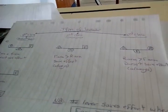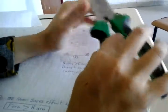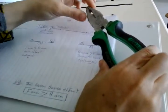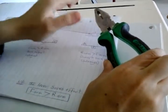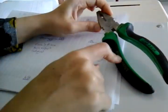Saving effort means: by applying a small force, we can overcome high resistance. For example, using pliers — we can't pull a nail with our hand, but using pliers, by a small effort on one side, we can pull the nail. This happens when the force arm is longer than the resistance arm.